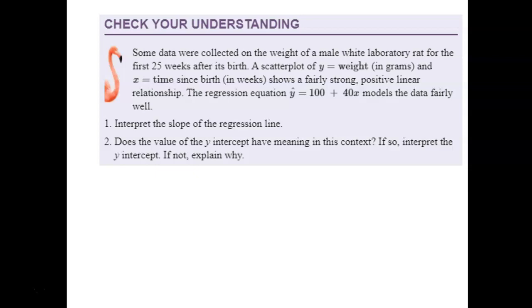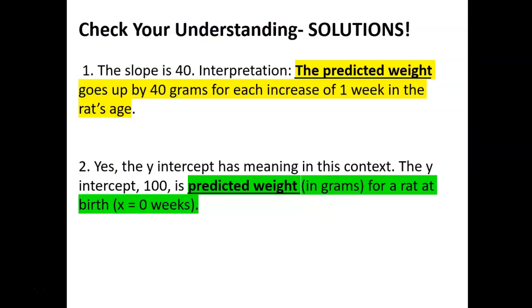Here's a check your understanding with the rat data again. We interpret the slope: the predicted weight of the rat goes up 40 grams for each increase of one week in the rat's age. Use the phrase 'predicted weight' and give the context — goes up by 40 grams for every increase of one week in the rat's age. For the y-intercept: yes, it has meaning — when x equals zero that means it's a newborn rat, so the predicted weight must be 100 grams according to this model.